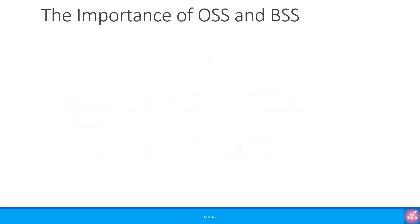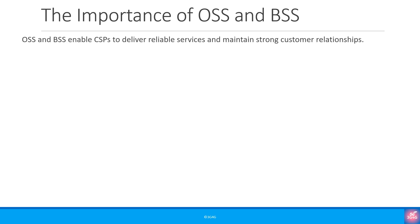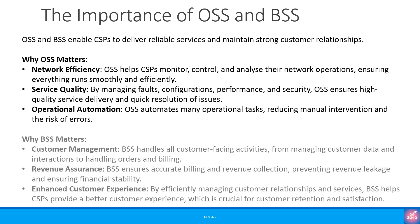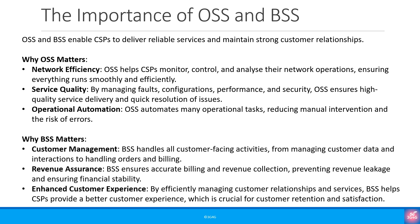One final question you might be asking is: why do OSS and BSS really matter? The simple answer is that they enable communication service providers to deliver reliable services and maintain strong, lasting relationships with their customers. OSS supports network efficiency by making sure everything runs smoothly and reliably, ensures high quality service delivery, allows for quick fault detection and resolution, and automates many operational tasks to reduce manual effort and minimize errors. BSS takes care of all customer-facing activities — from managing customer data and interactions to handling orders and billing — ensures accurate revenue collection, prevents revenue leakage, and plays a key role in delivering better customer experience, which is vital for customer retention and satisfaction.